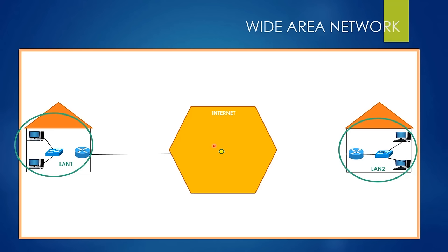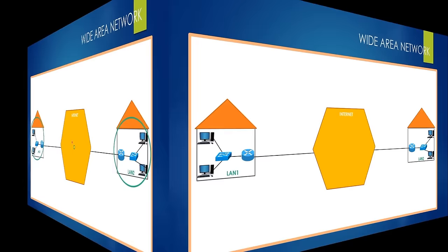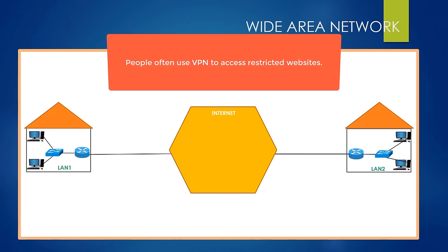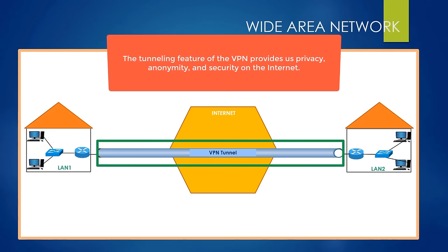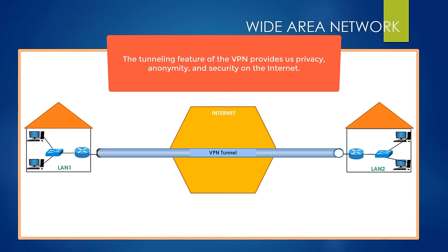Setting up a WAN is costly and not easy. Fortunately, there are various methods, and we will only talk about the most popular and cost-effective method: WAN by using VPN — Virtual Private Network. People usually use VPN to access restricted websites because VPN ensures anonymity and encrypts our data before sending the packet, giving high security in general. The most important feature you should know about VPN is tunneling, which provides privacy, anonymity and security by creating a special network connection over a public network.